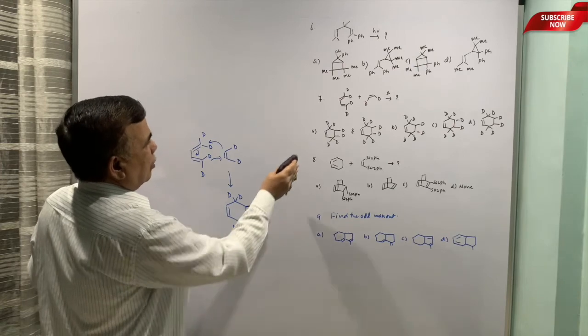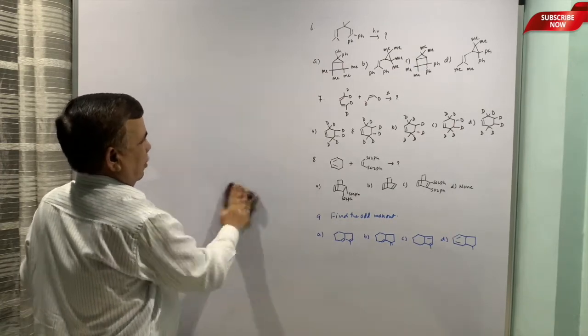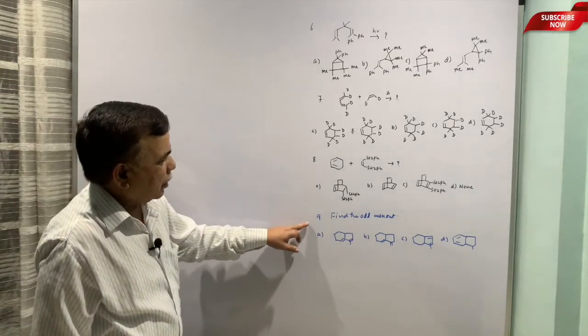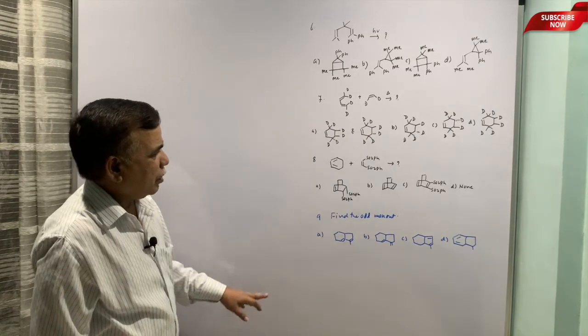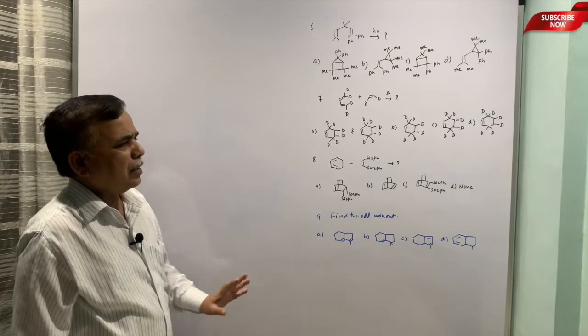So your last product is correct where deuterium is cis. Here it is there but the trans product is also given alongside, so that is wrong. Then find the odd man out.